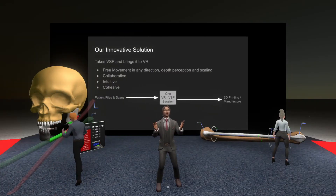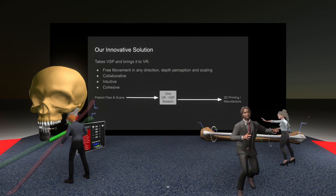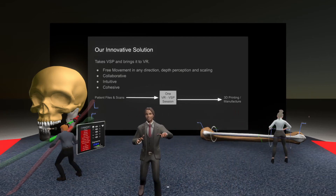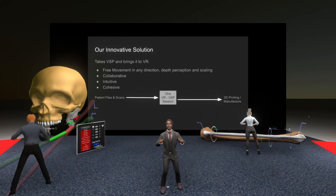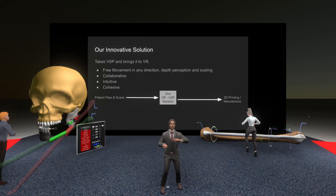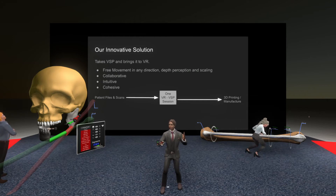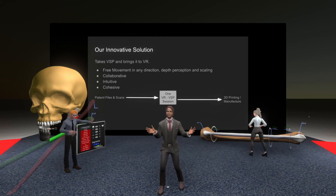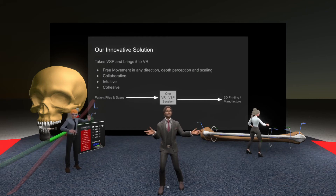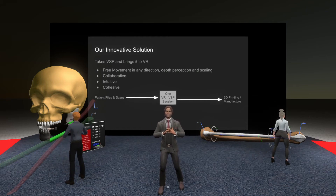Our solution takes VSP and brings it to VR. With this you get free movement in any direction with depth perception and scaling. This provides unique and natural viewing angles implemented through normal human movements or controls at your fingertips. It's also collaborative — 20-plus people can be in the same VR space, with each person able to interact with and discuss the plan from anywhere in the world.